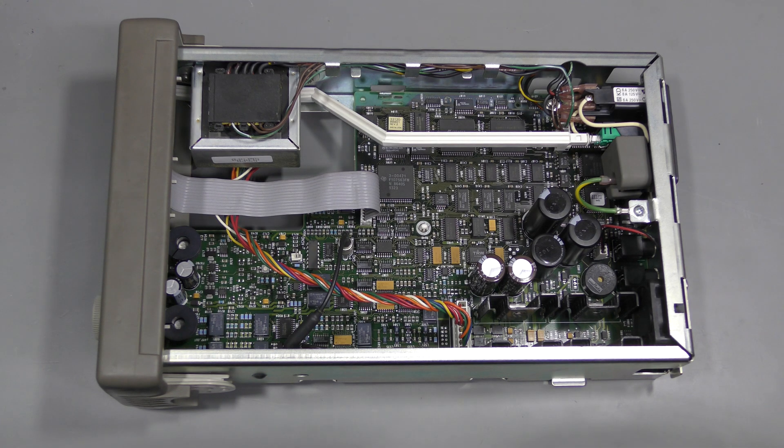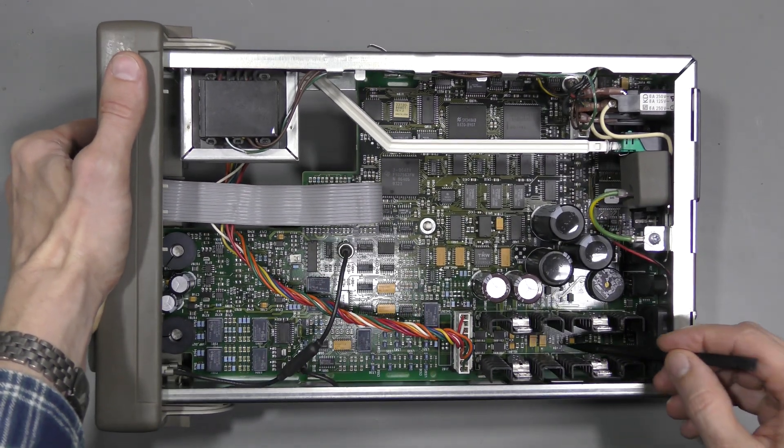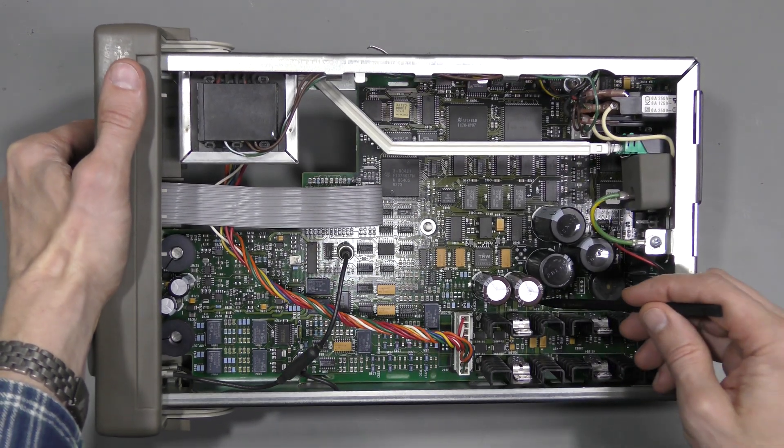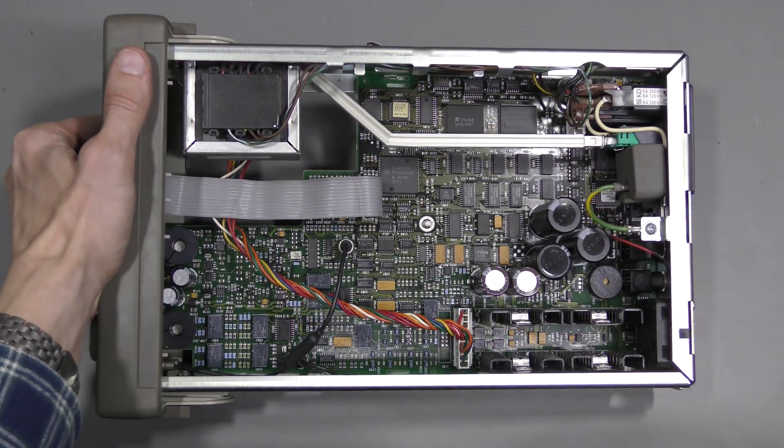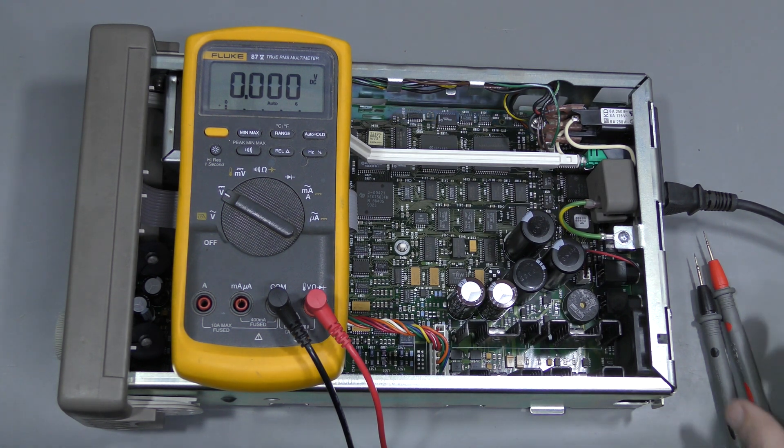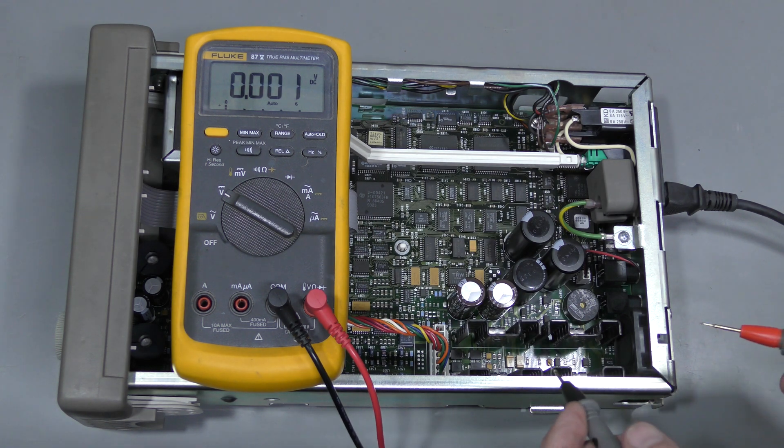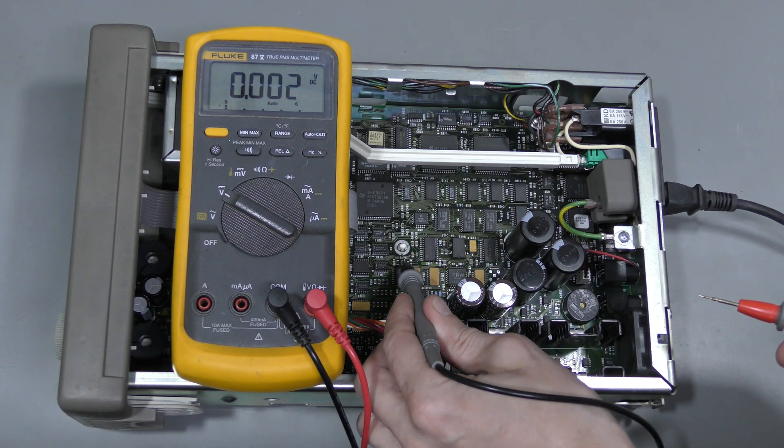Here we are inside and nothing is obviously wrong. High quality build as expected. The first thing is to check voltages, of course. Here I see some markings on the board: a plus 5V rail here, plus and minus 18 and minus 5.2. Let's check. I doubt that the problem is with power rails because the unit is mostly working, but this should be checked first as a matter of course anyway.